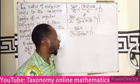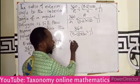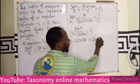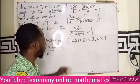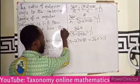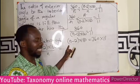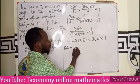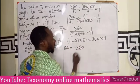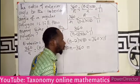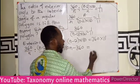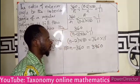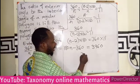Cross-multiplying: 1 multiplies (n−2)×180, and 11 multiplies 360. So I have 180(n−2) = 360 × 11. Expanding the bracket gives 180n minus 360 equals 360 × 11.